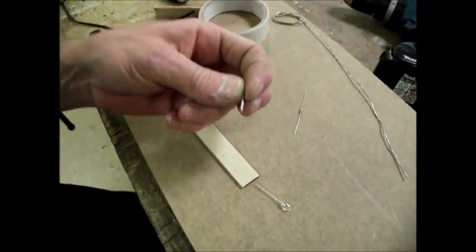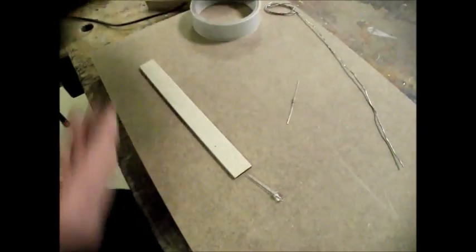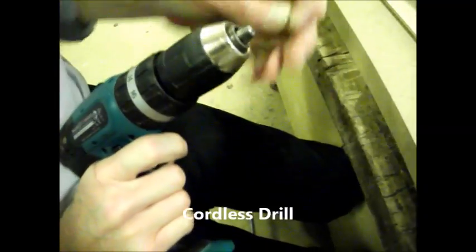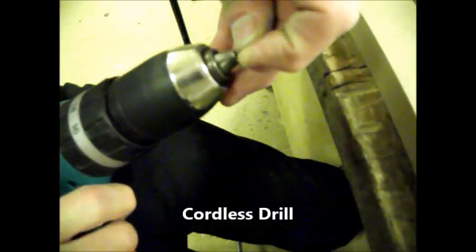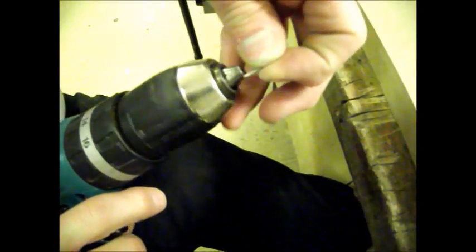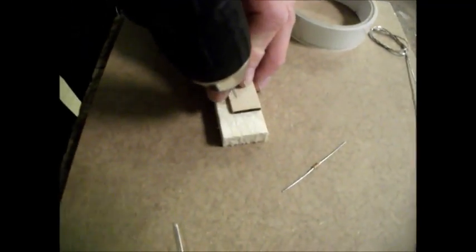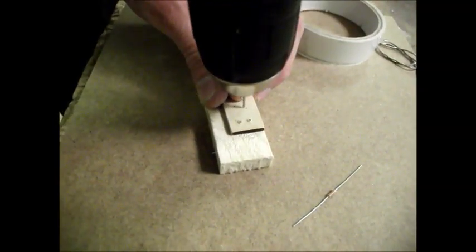And then put that in the chuck of a cordless drill. Make sure you get it in centrally and tighten it up. Over a block of scrap wood, put the panel pin on the two holes and drill through. And that one there for the resistor.